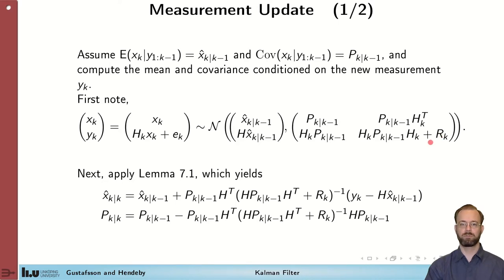If we now apply lemma 7.1, we get the following expressions, which are the Kalman filter measurement update equations. Next, we will look at the structure of these two equations to try to highlight some properties of it.